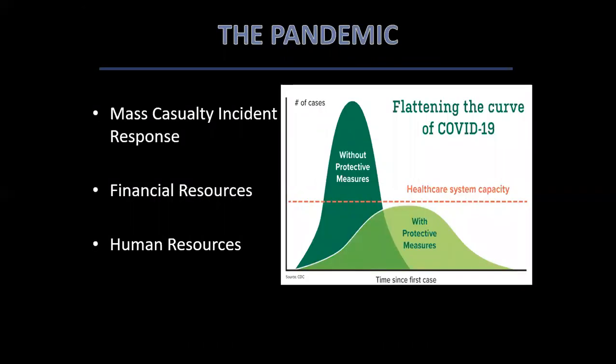A pandemic has the ability to kill large numbers of people and qualifies as a mass casualty incident. The response to such an incident requires long-lasting financial and human resources comprising senior, well-trained, and motivated professionals. This is why governments worldwide have concentrated efforts on flattening the curve so that healthcare system capabilities are not overwhelmed all at once.